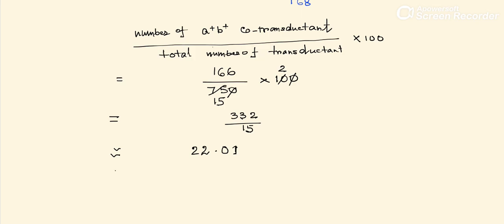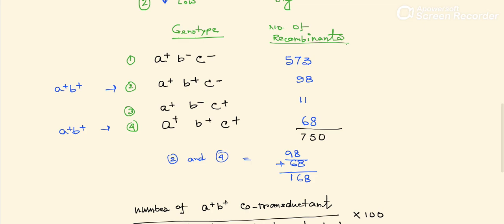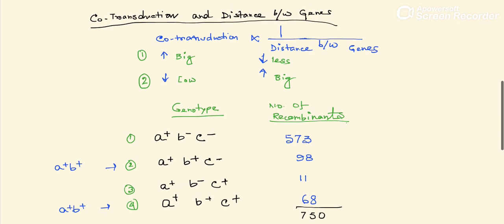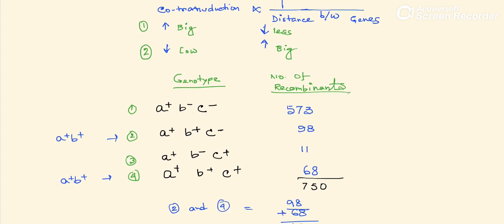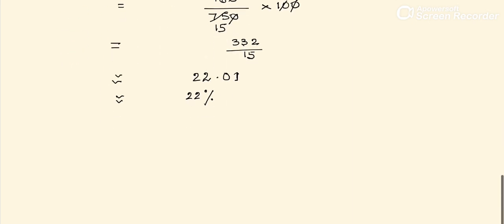This gives us approximately 22 percent. So the co-transduction frequency for a+ and b+ is approximately 22%. Next, they want to know the co-transduction frequency of b+ and c+. We look for where b+ and c+ are both present — that is only in genotype number 4, which has the value 68.